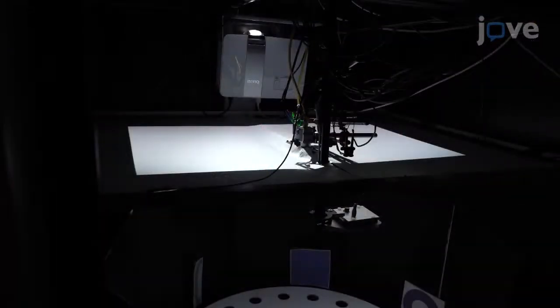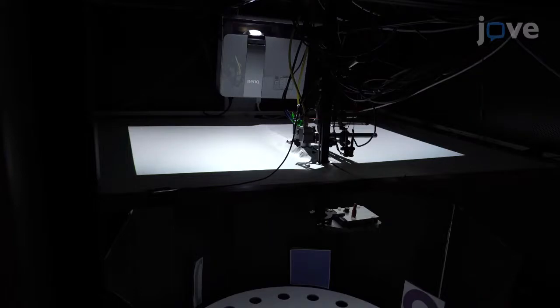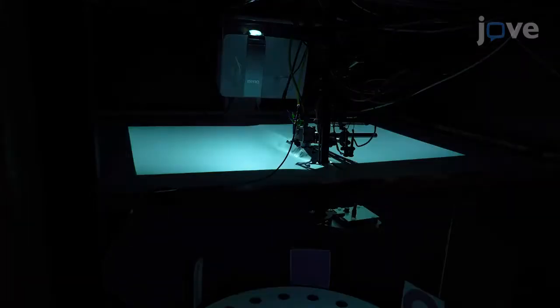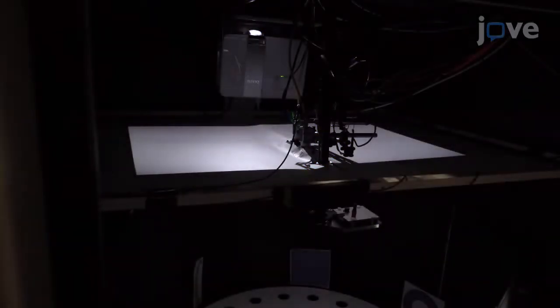Then place a translucent screen 64 centimeters above the arena to back project overhead aversive visual stimuli using a projector. Calibrate the projector light so that there is 5 to 10 lux at the center of the platform surface.